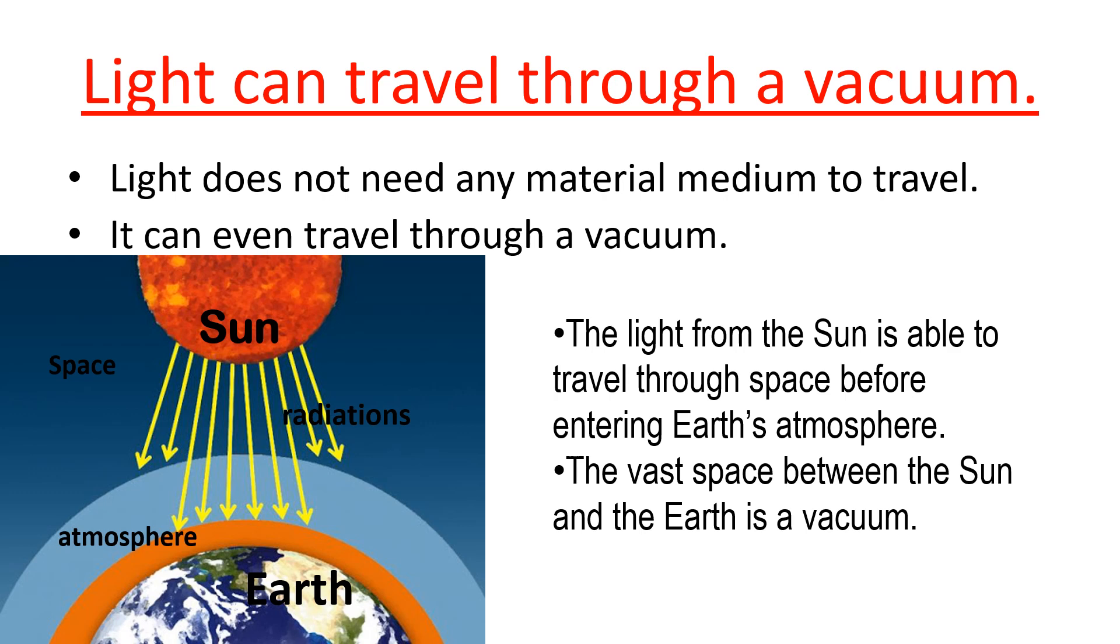Another property is light can travel through a vacuum. Light does not need any material medium to travel. It can even travel through a vacuum. And the light from the sun is able to travel through space before entering earth's atmosphere. The vast space between the sun and the earth is a vacuum.